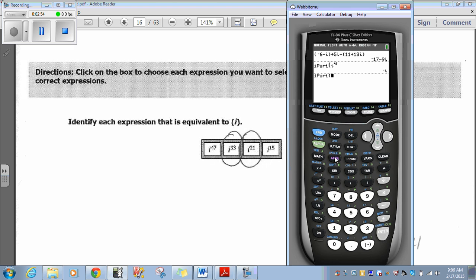Let's try i to the 47th first. So, we'll just type in i to the 47th. And that's negative i. So, that doesn't match for us. Let's try the next one. Go math, num, option 3, IPART.